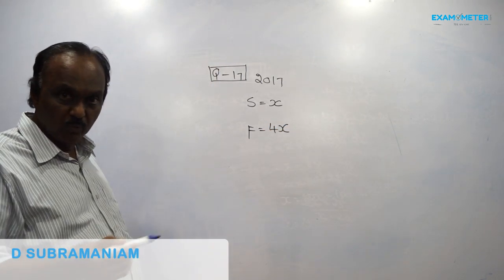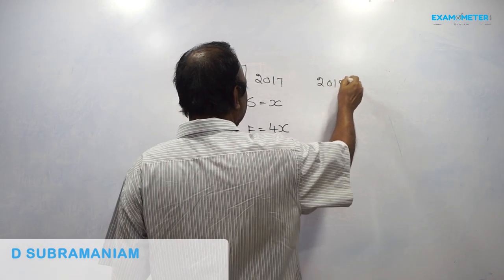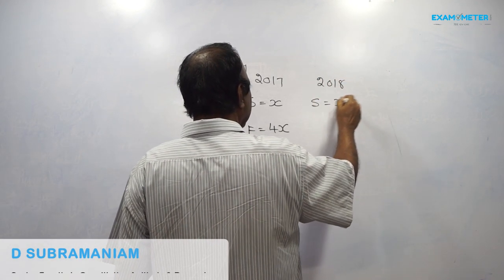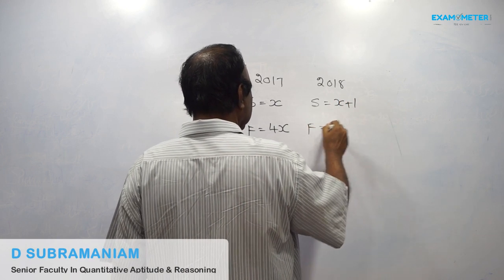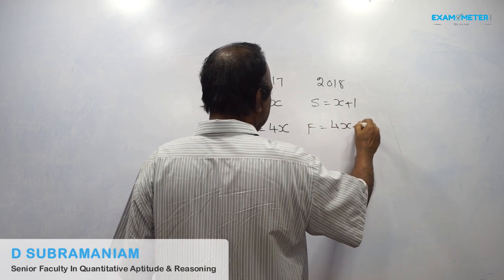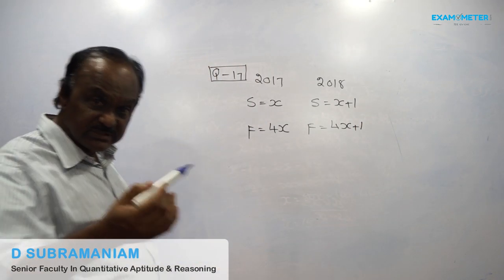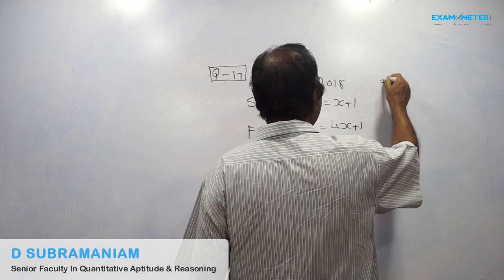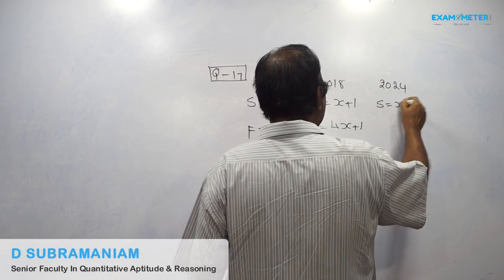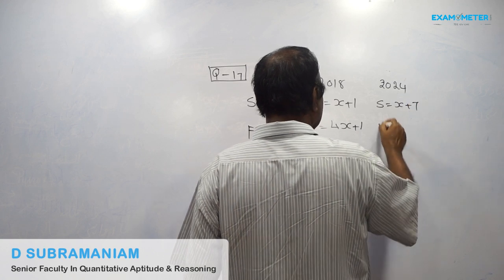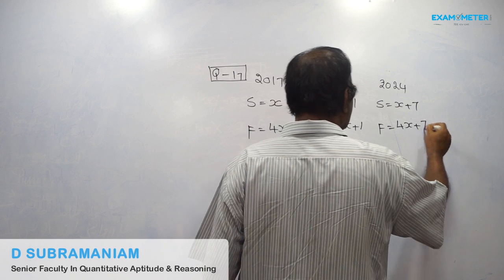One year ago, the son was x. Now, the son will be x plus one, and the father will be four x plus one. After six years, the son will be x plus seven, and the father will be four x plus seven.